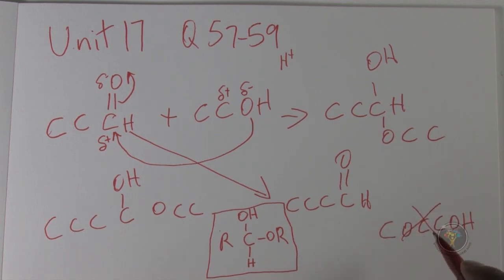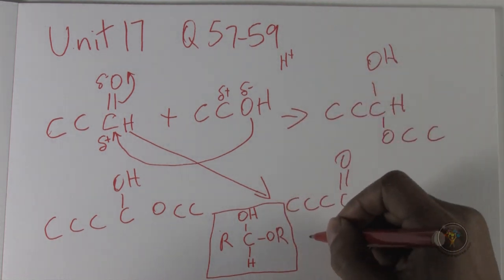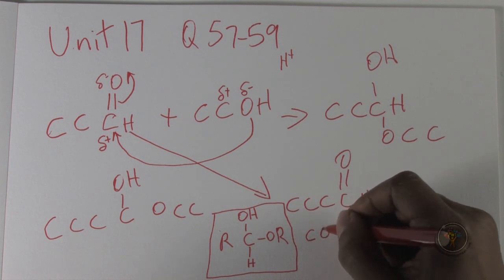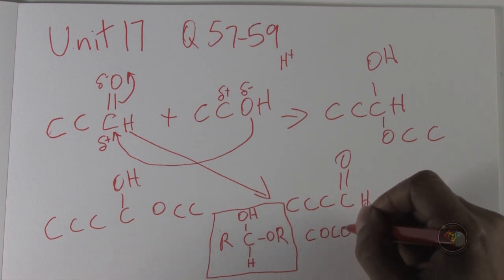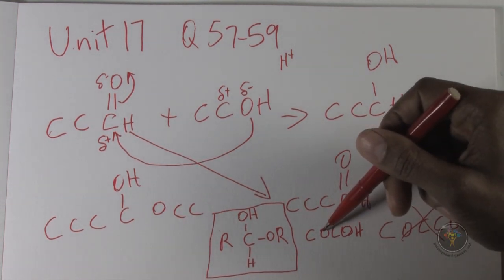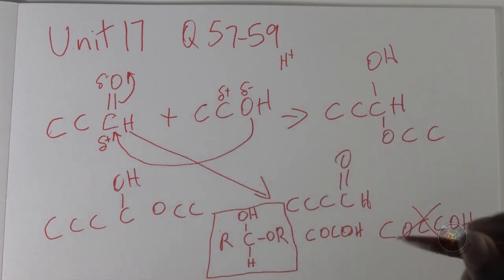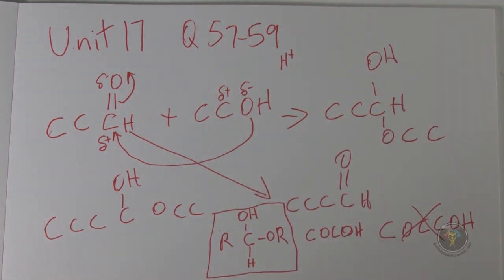Now for Roman numeral two, we have carbon-oxygen-carbon-OH-OH. You can see that the OH and the oxygen are both bonded to this carbon, so that is a hemiacetal.